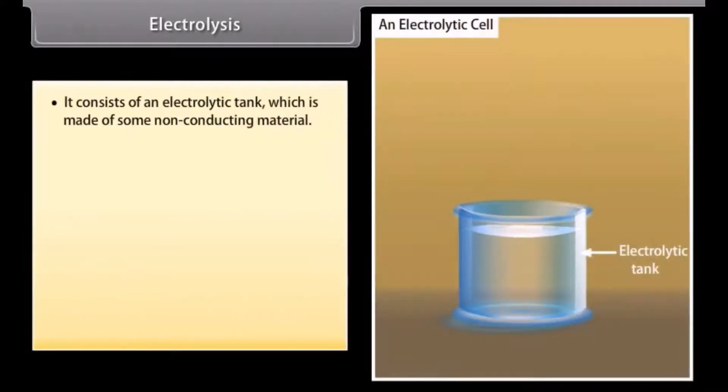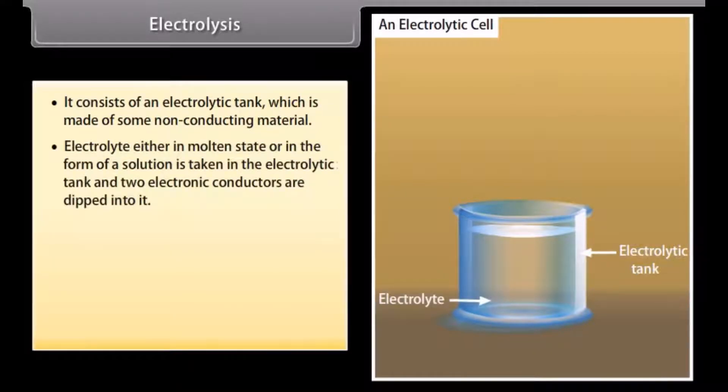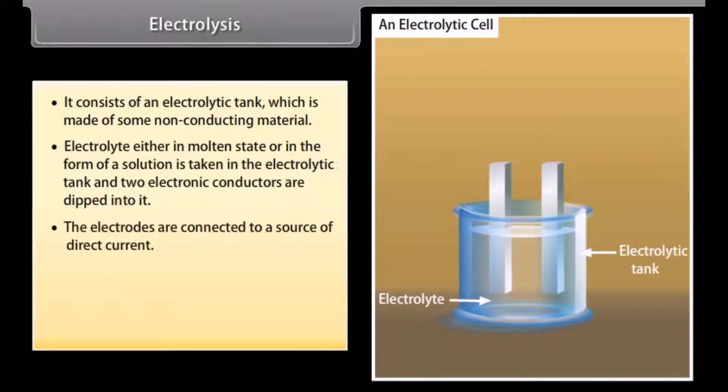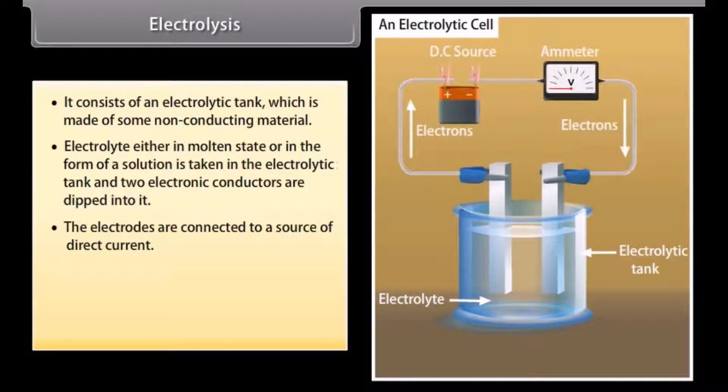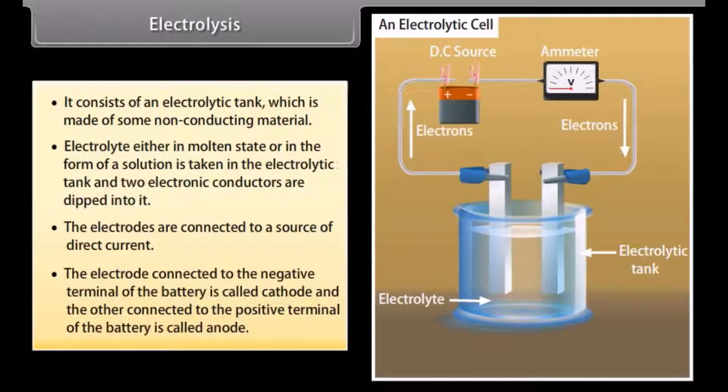It consists of an electrolytic tank, which is made of some non-conducting material. Electrolyte, either in molten state or in the form of a solution, is taken in the electrolytic tank and two electronic conductors are dipped into it. The electrodes are connected to a source of direct current. The electrode connected to the negative terminal of the battery is called cathode and the other connected to the positive terminal of the battery is called anode.